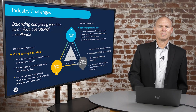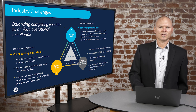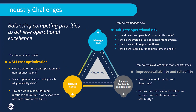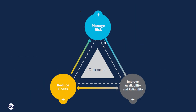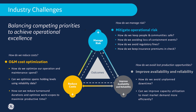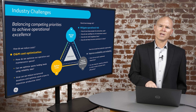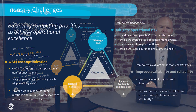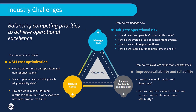The APM Strategy application suite is designed to help customers address specific industry challenges — those associated with the competing interests of balancing risk, cost, and reliability. Meeting those objectives of your organization means aligning to those objectives and measuring the performance of your strategies against them.